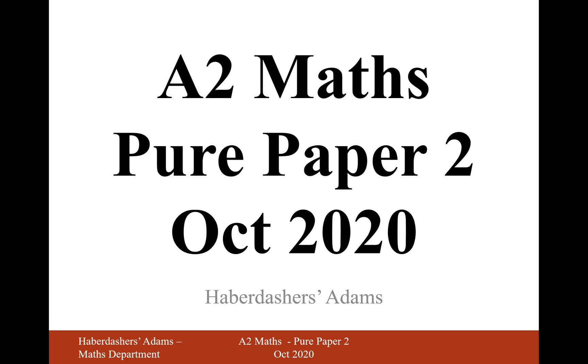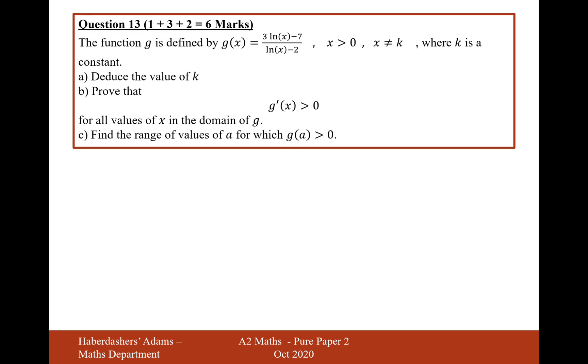Hello there and welcome to the October 2020 paper. Here we're looking at paper 2, question 13. The function g is defined by g(x) equals 3 ln(x) minus 7 over ln(x) minus 2, where x is greater than 0, and x cannot equal k, where k is a constant.